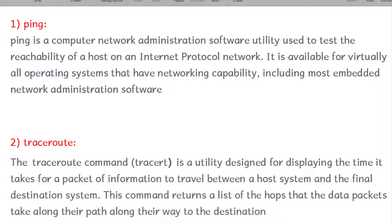Welcome to the practical series of computer networks. In this session, we will study some Windows utility commands to check network connectivity and get information about networks and hosts. The first command is the ping command, which is used to check the reachability of a particular host or network. Next is the traceroute command, which is used to display the time it takes for a packet to travel from source to destination.